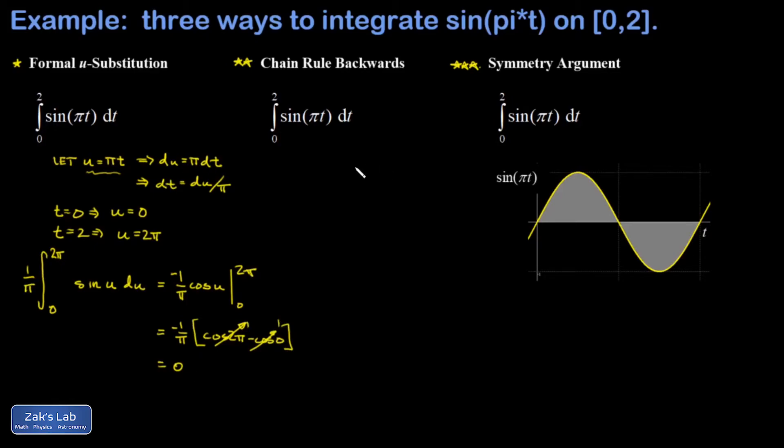Okay, level two. Let's try to use the chain rule backwards in a less formal way. The idea behind this is that when I see something like the sine of pi t, I think to myself, well, maybe that came from differentiating something like the cosine of pi t.